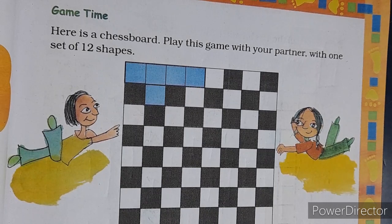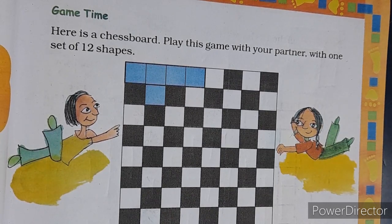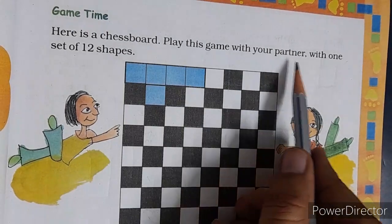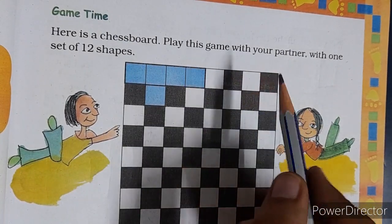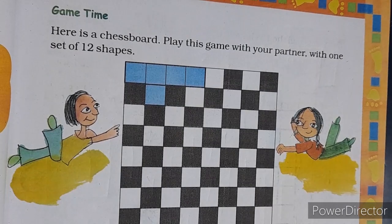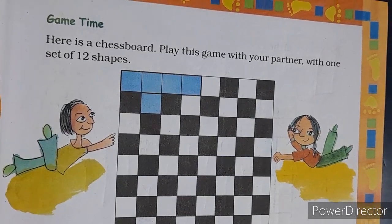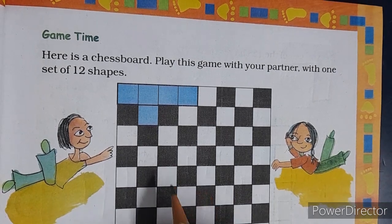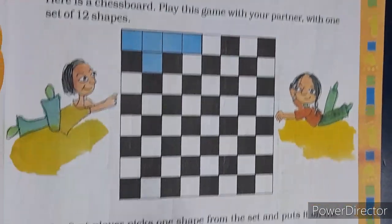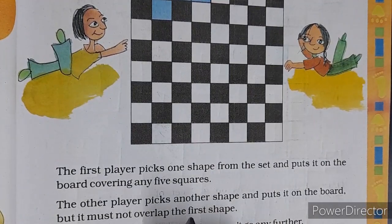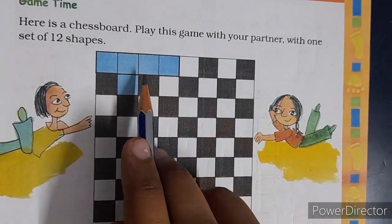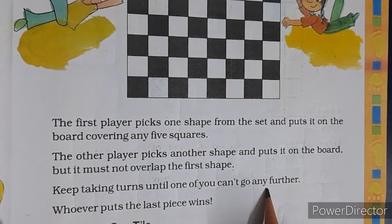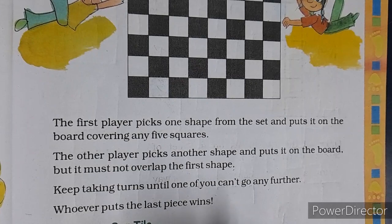Here is a chess board. Play this game with your partner with one set of twelve shapes. First player picks one shape from the sets and put it on the board covering any five squares. The other player picks another shape, puts it on the board, not over the first shape. Keep taking turn until one of you fills the chess board. Whoever places the most pieces will be the winner.